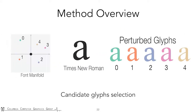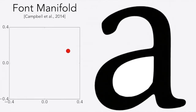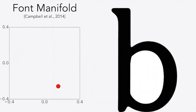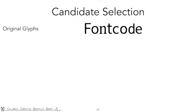Now let's take a look at the glyph selection step in detail. Our glyph selection is based on the concept of font manifold, which was first introduced by Campbell and colleagues in 2014. The font manifold is basically a parametric model to generate glyphs. On the left is a point moving on the 2D font manifold, and the corresponding glyph is shown on the right. Our goal is to choose a set of points on the font manifold whose corresponding glyphs will serve as our perturbed glyphs in information embedding.